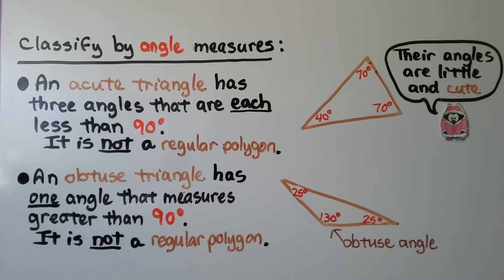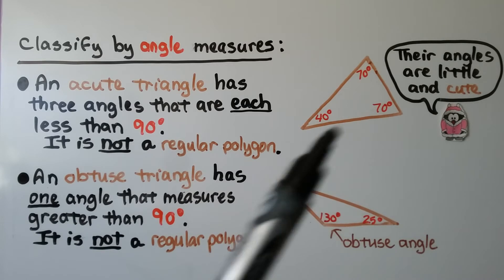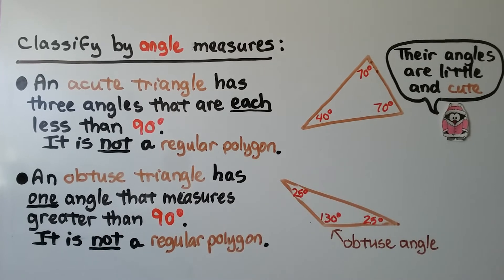An acute triangle has three angles that are each less than 90 degrees. It is not a regular polygon. Their angles are little and cute — they're less than 90 degrees, so they're smaller.